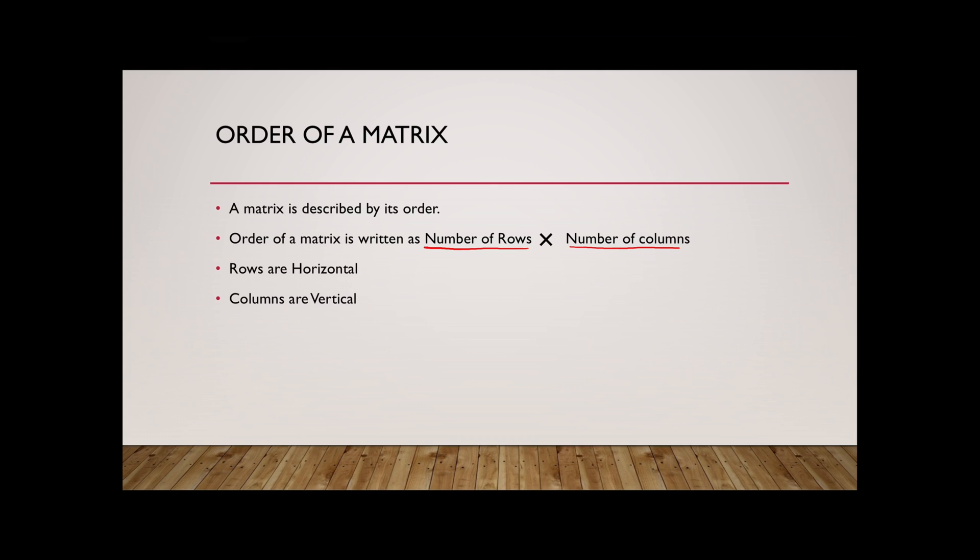So let me explain that by writing just a random matrix here. All right. So here we have a matrix with random elements 5, 7, minus 1, 4, 3, 2.